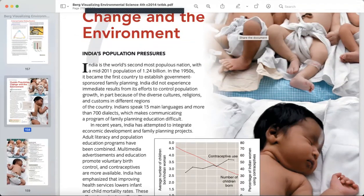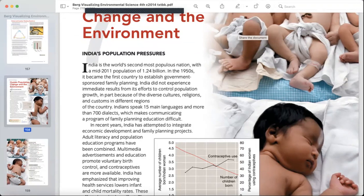India's population pressure. India is the world's second most populous nation with a mid 2011 population of 1.24 billion people. In the 1950s,